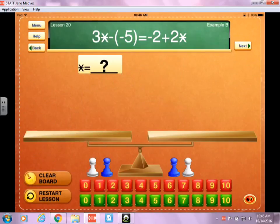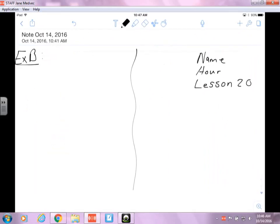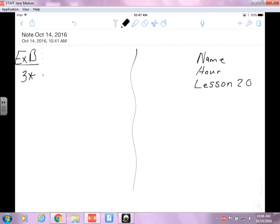Okay, so the problem is 3 star minus a negative 5 equals negative 2 plus 2 star. You can go ahead and write that down. I'm going to go ahead and write it on my notes.